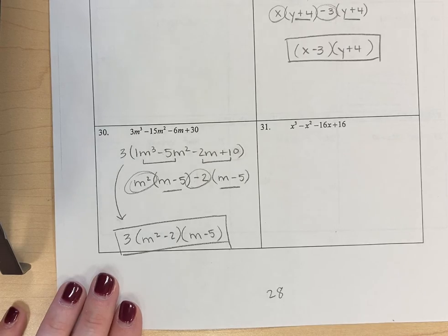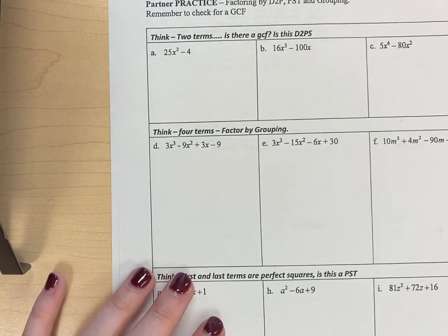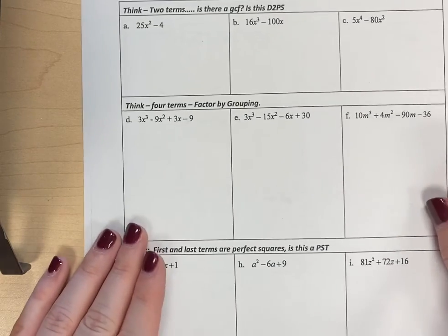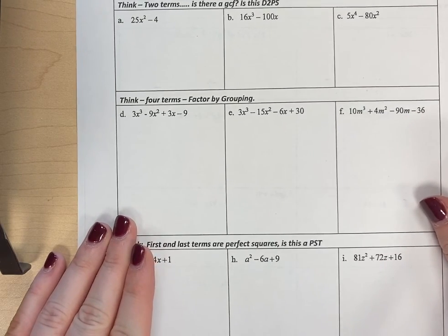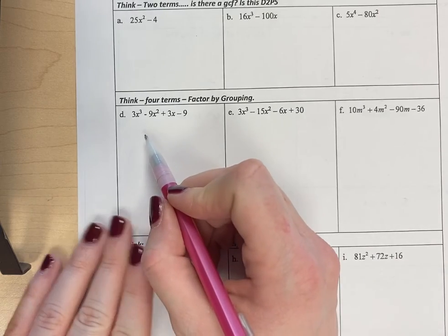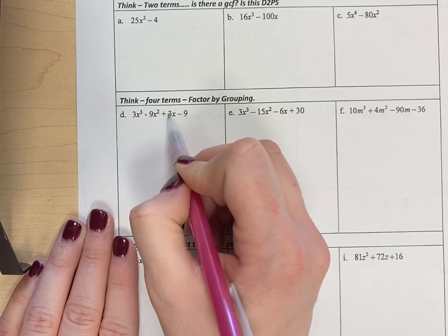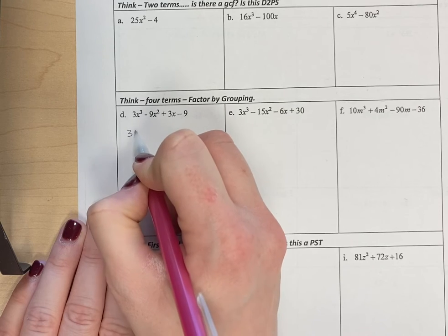I'm going to go through one more example on the next page, page 29, that also has a GCF. So let's look at D, for example, right here. I know that 3 goes into all of these, so I'm going to go ahead and factor out 3.